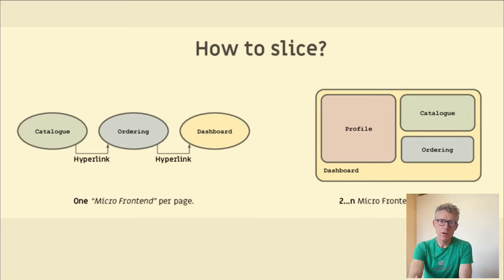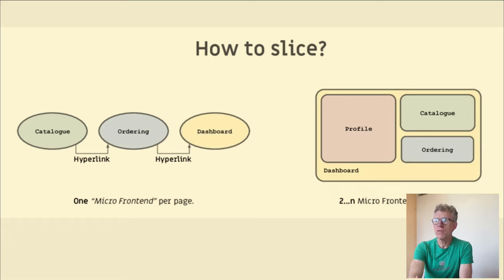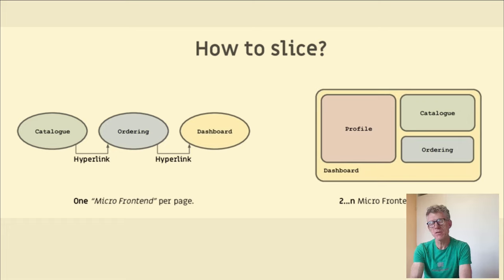How do we slice our application? How do we slice our frontend? You can have one frontend per page — when that is the case, you can use hyperlinks. When you have multiple micro frontends per page, you can do it differently. The idea is that one team is responsible for developing, deploying, and releasing one micro frontend. The micro frontend in this context is also called a vertical, and every vertical is responsible for a business domain or use case — such as profile, catalog, or ordering.